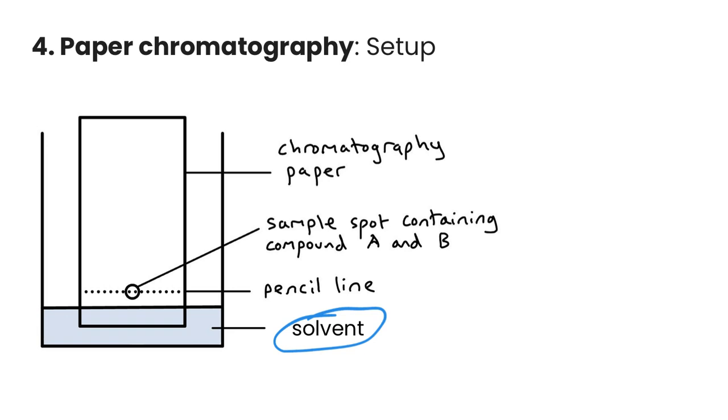Then what we do is we take this chromatography paper here, we draw a pencil line because our pencil is not going to dissolve in our solvent as it's coming up. If we use a pen, it could dissolve and start going up and mess up our samples, so we definitely don't want to do that. Then we add in a sample spot on that pencil line that's going to contain a couple of different compounds, so compound A and compound B, for example.